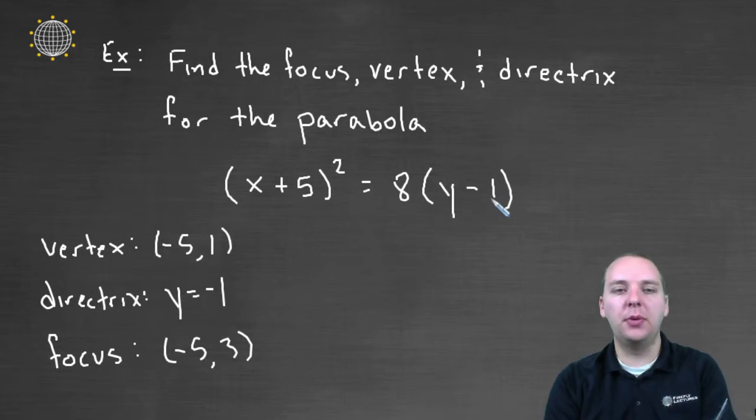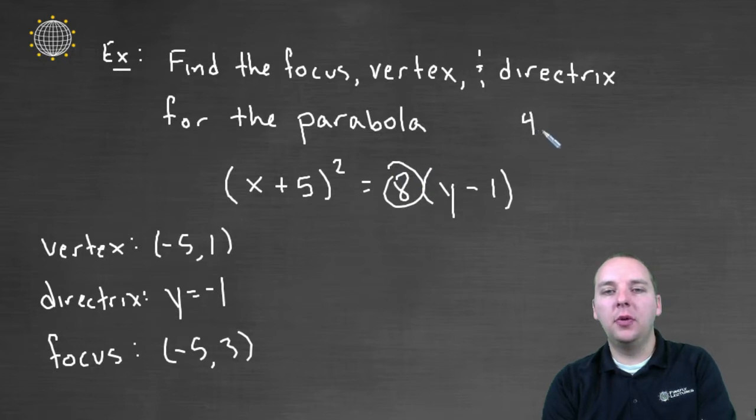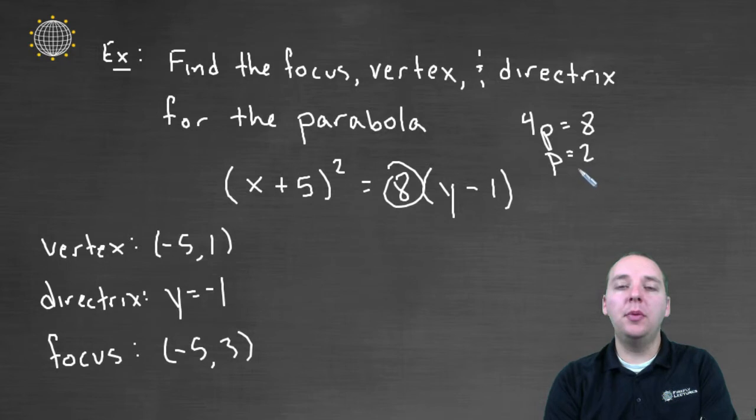Once you know the p value, once you know that 4p equals 8, and so p is 2, I remember that p is the distance that the focus is away from the vertex. And so let's think about this guy.